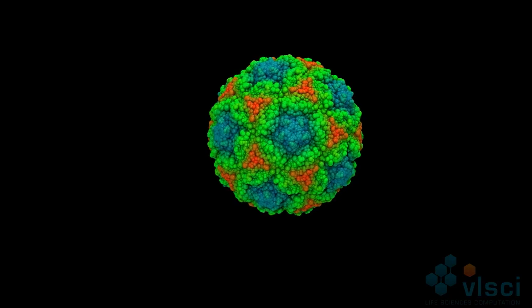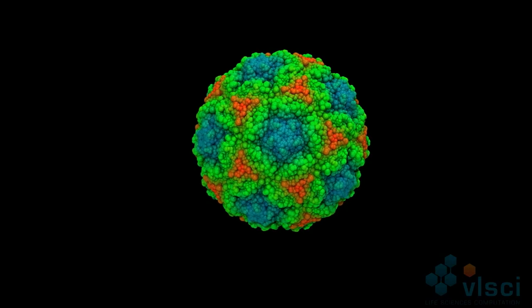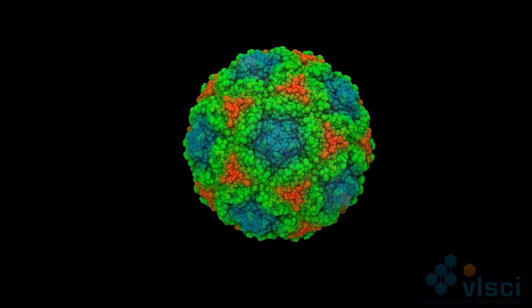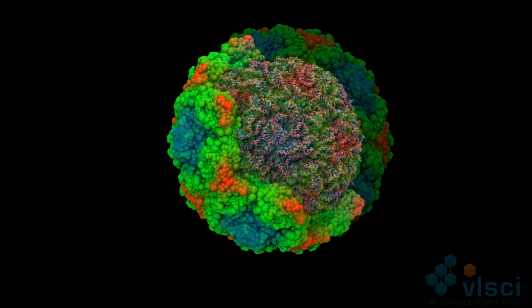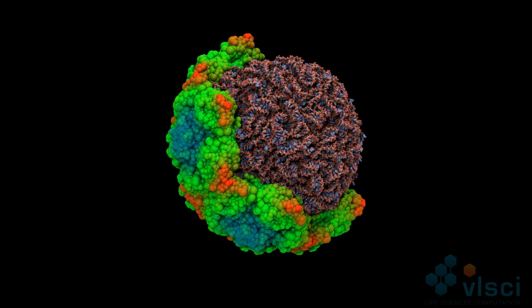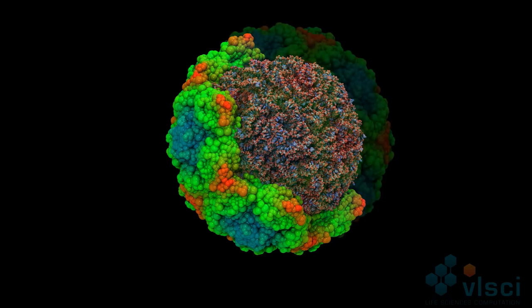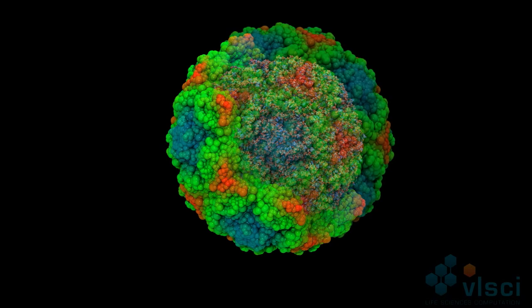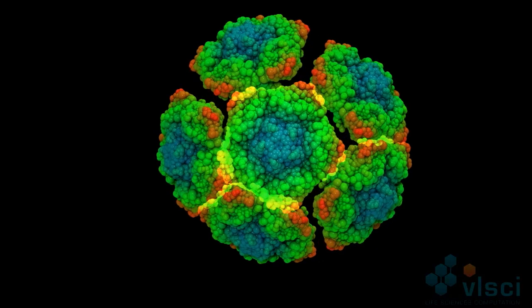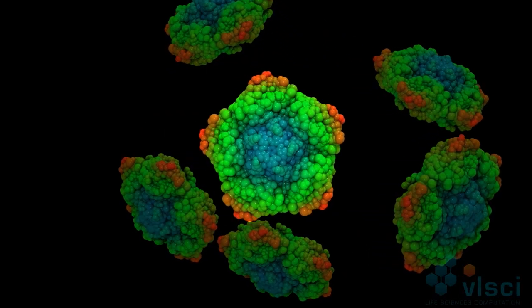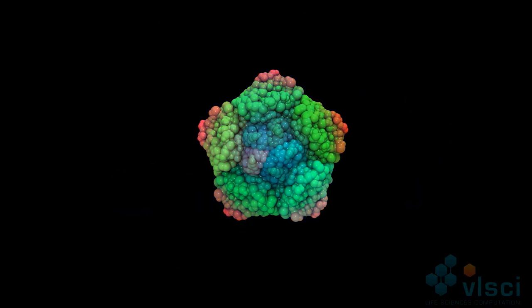So what we have here is our model of the rhinovirus — its basic components. When we zoom up to the virus we're actually looking on the inside of the virus. The virus itself is sort of like an egg. You have the outside bit, or the shell — we call it the capsid — and on the inside we actually have the RNA, and the RNA is the infectious part. So once that gets inside our cells, this is what makes us sick.